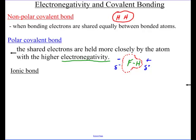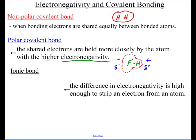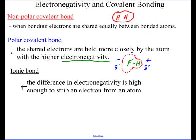And then, of course, our ionic bond, which we know very well from the last chapter. An ionic bond, the difference in electronegativity is high enough to strip an electron from an atom. In other words, as you know, if I'm an atom here, let's say I'm a sodium atom.